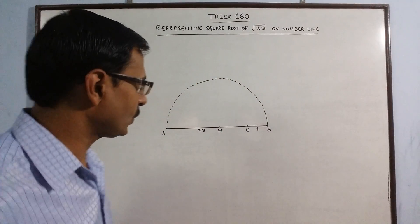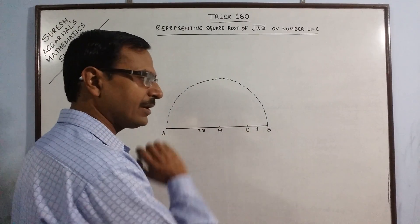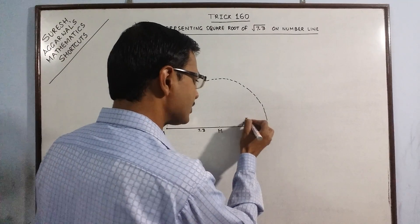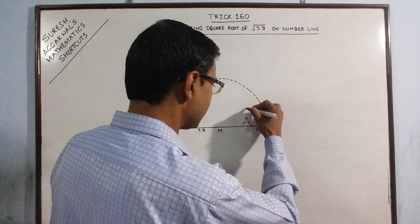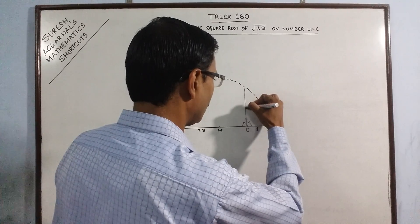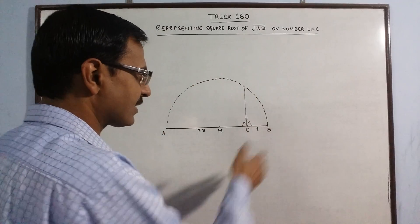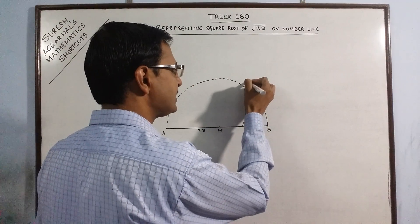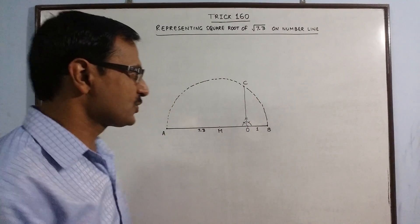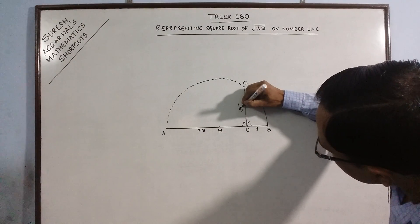Final step here: now I will have to draw a perpendicular at O, a line which is perpendicular to AB and drawn at O. This is the perpendicular drawn at point O. This perpendicular is meeting this semicircle at a point, say C. So OC represents the square root of the number 7.3.